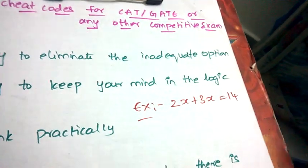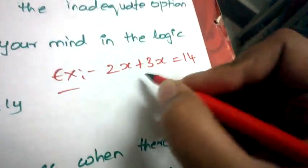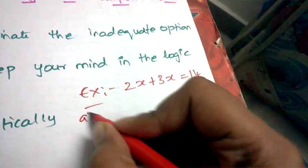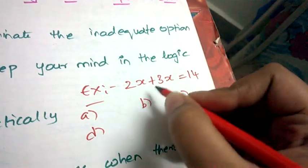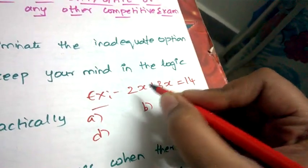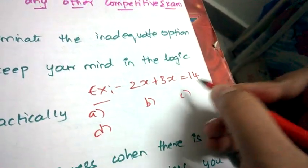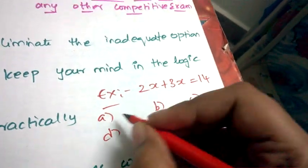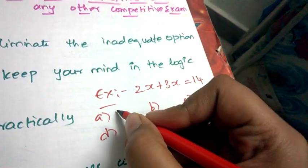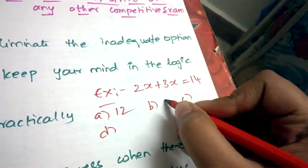14. Let it be 2x plus 3x equals 14 and the given options are like - they are asking you to find out the x value. The question is given: 2x plus 3x equals 14, now find the value of x.